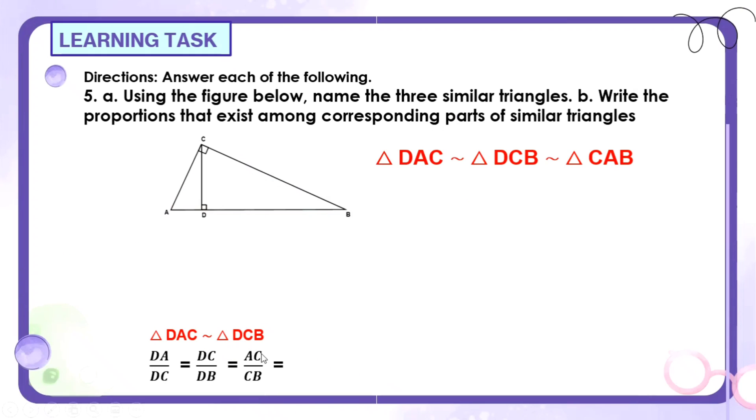Next, syempre, hindi lang yan, meron pa. Sumunod naman na gagamitin natin is yung DAC. DAC, yung maliit na triangle. Tapos, yung malaki, yung pinakamalaki. Ito, yung triangle na maliit, tapos itong pinakamalaki. Yun naman yung i-compare natin. Ito yung maliit. Tapos, ito, itong CAB ay ito. Ito yun, yung isang buo niya. Ang pwedeng maging proportion dyan is yung DA over CA. DA over CA is equal to DC over CB. At, yung natitira, we have AC over AB. Yan yung proportion naman sa dalawang triangle na ito.